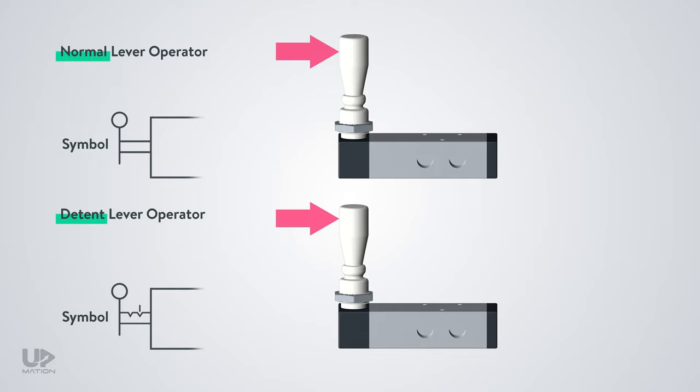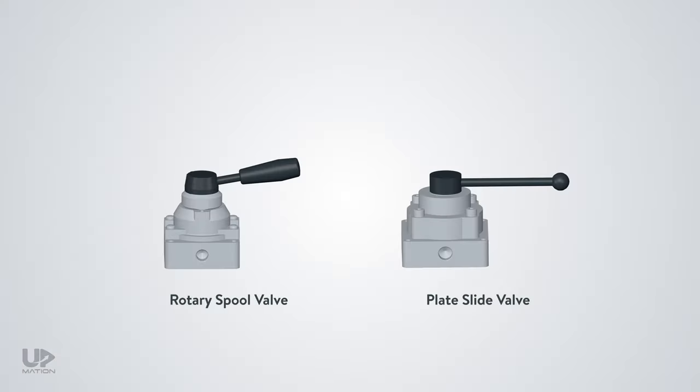There might be a detent lever that will hold its last position until the operator brings it back again. And finally, it could be a pedal that the operator will actuate by foot. Among different types of directional control valves, the rotary spool valves and also the plate slide valves use manual actuation like a lever most of the time.